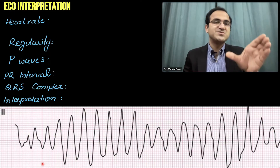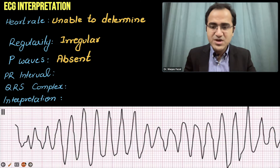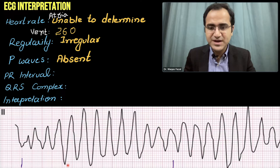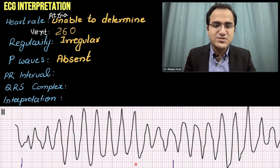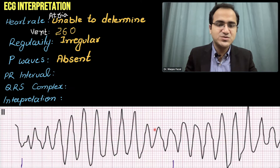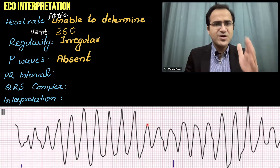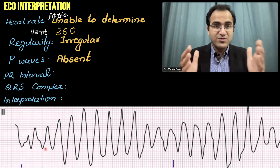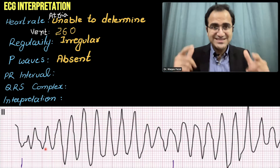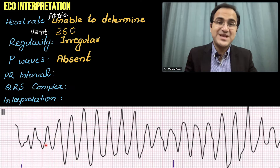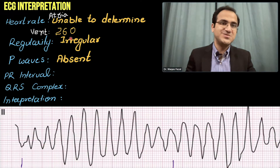Counting 15 large boxes, we find approximately 13 QRS complexes within those 15 large boxes. In 30 large boxes that would be double — 26 QRS complexes. Multiplying 26 by 10 gives 260 beats per minute. So the ventricular rate is 260 beats per minute.